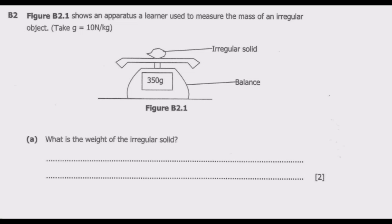So we know this is the irregular solid. The reading is at 350 grams. Weight is given by mass times gravity. Mass should be in kg.